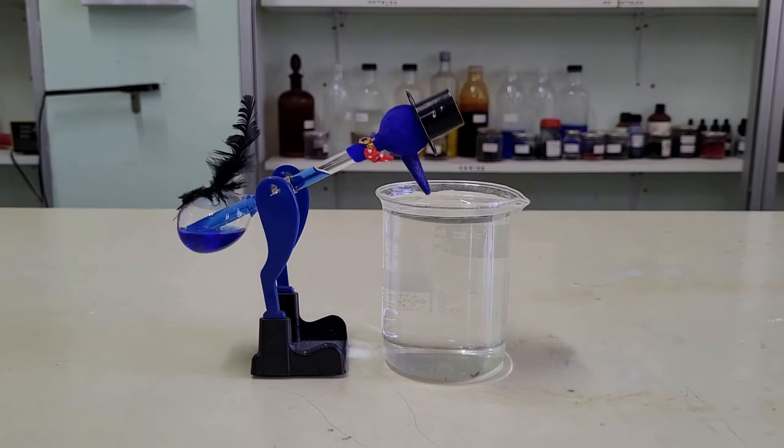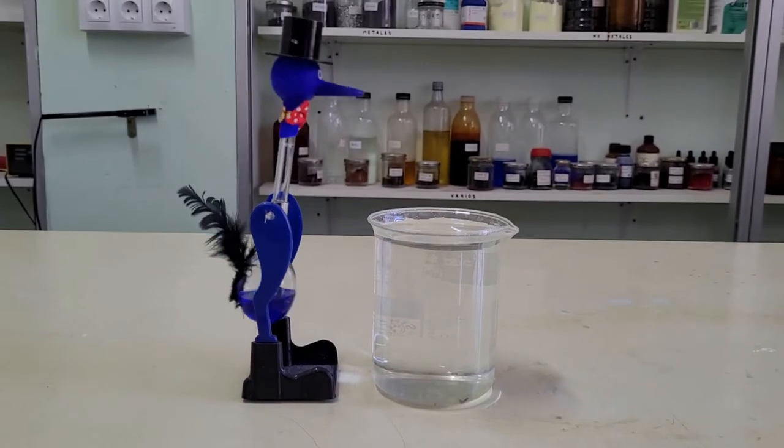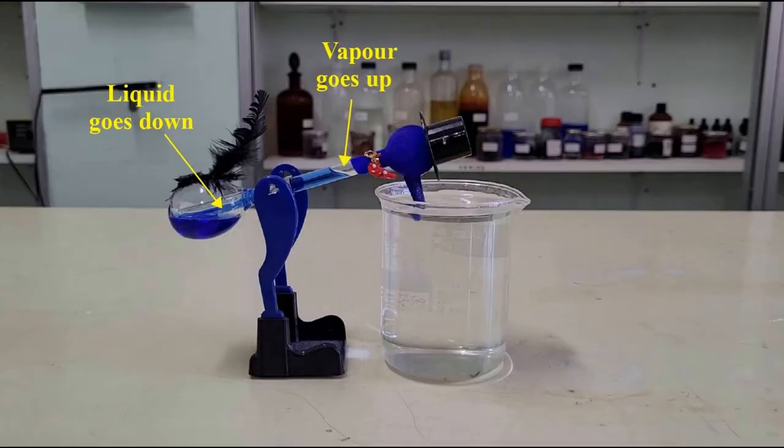As the ether rises through the tube, the bird's center of gravity rises and moves away from the axis of rotation. A couple of forces is created and it makes the little bird lean more and more.